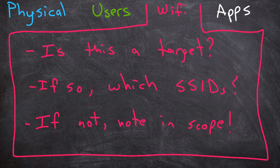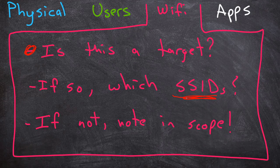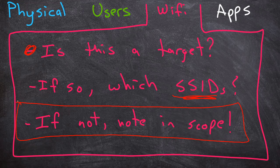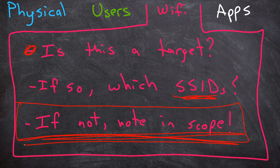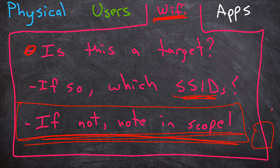And then Wi-Fi. This is something that hopefully everybody wants to have tested, but you should make sure it's a target. If so, which SSIDs? Do they only want you to test the public-facing SSIDs, or do they want you to test the private SSIDs as well? If they do not want you to look at Wi-Fi at all, I encourage you to put that in your scope and try to encourage them to include some Wi-Fi testing, because it's such a huge attack vector. Somebody could literally stand outside the building and hack from the parking lot — and that's not something you want to leave untested.